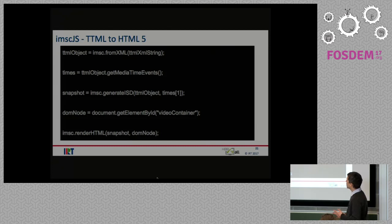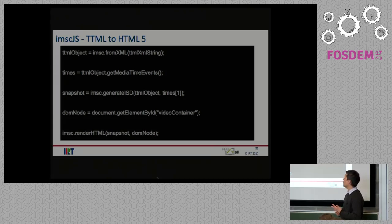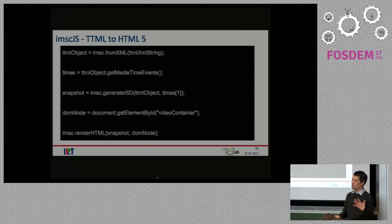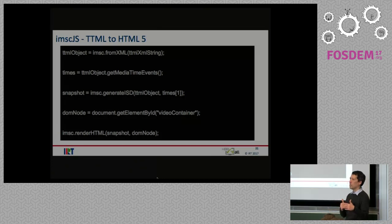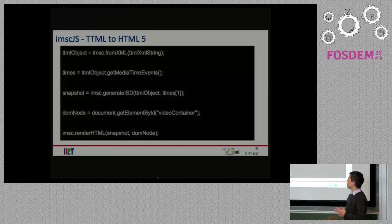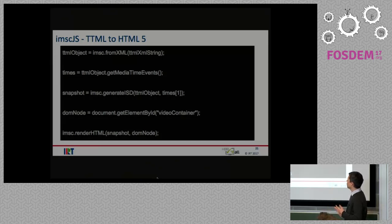To show you how easy it is to use: once you have your XML file loaded in an XML string, you can use the fromXML method from the IMSC object and you get back a TTML object. The TTML object has a function that gives you all media times — the times where subtitle presentation changes. By going through this array, you can generate a snapshot, a representation of the TTML document for that specific time, which in TTML language is called an intermediate synchronic document. Then if you have a DOM node where you want to insert your subtitle HTML, just give it to the renderHTML function of IMSC with the snapshot and the DOM node, and it renders there. It's quite easy to use and very standard-conformant.